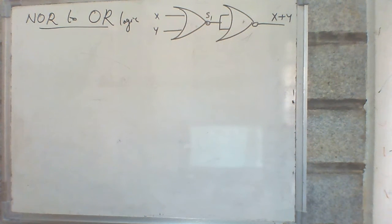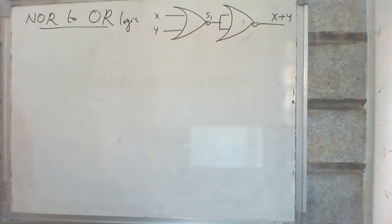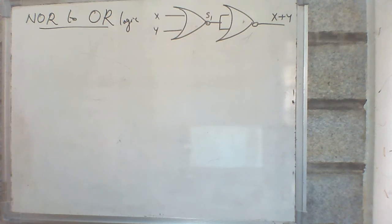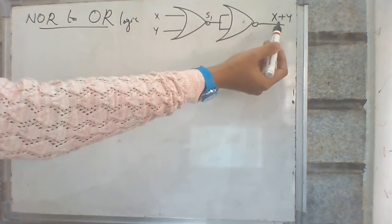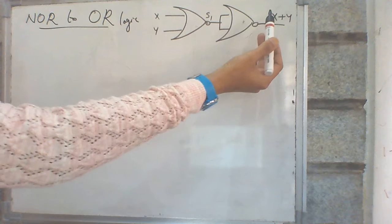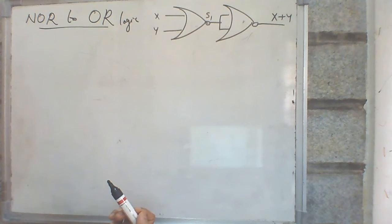NOR to OR logic. The NOR to OR logic diagram is the same as the NAND to AND logic diagram. Two NOR gates are required to design an OR gate. X and Y are the inputs. The output of the OR gate is X plus Y.